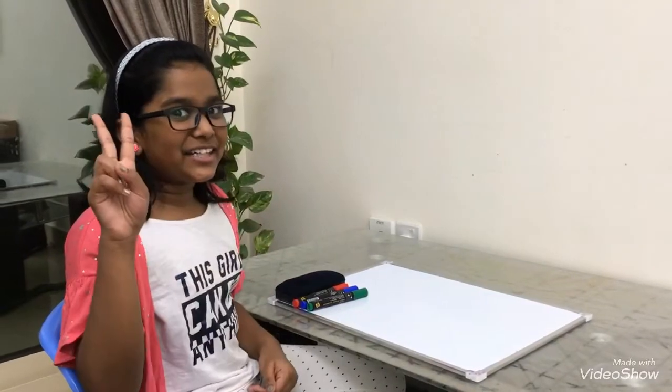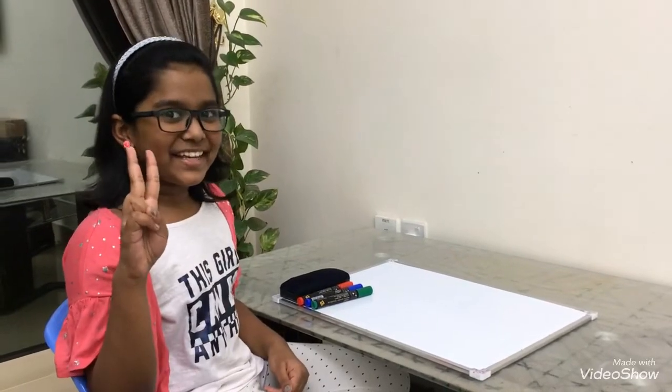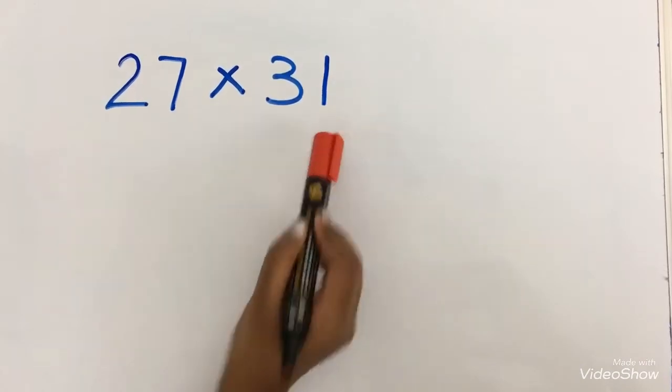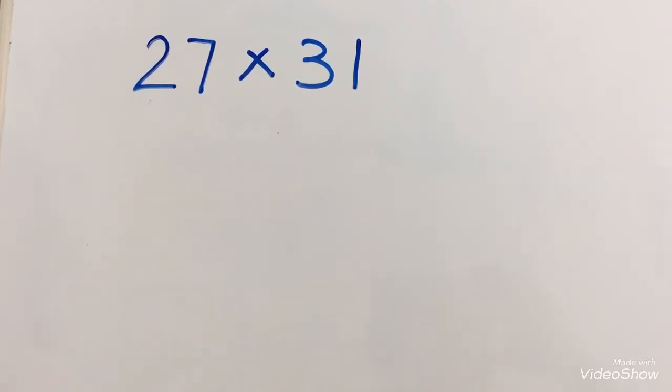In that you can find tricks of doing the calculation in an easy and fast way. I will tell you two digit easy multiplication. We have taken two digit number 27 into 31. Now let's start.